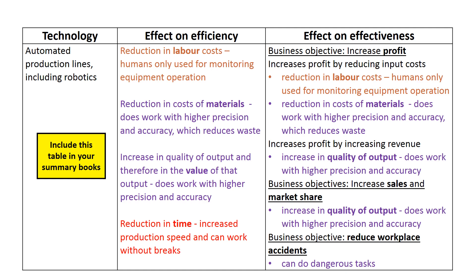We can now look at how automated production lines and robotics can improve effectiveness. Effectiveness refers to the extent to which an operations management strategy contributes to the achievement of business objectives. We must first identify the business objectives that may be achieved through automated production lines and robotics. I've chosen four: increasing profits, increasing sales and market share, and reducing workplace accidents.